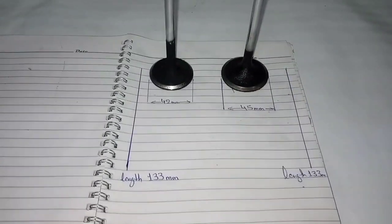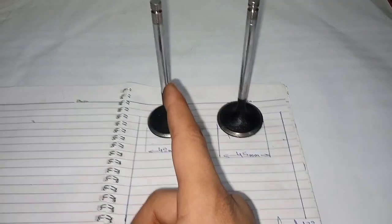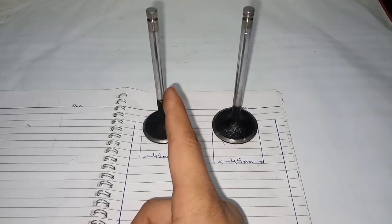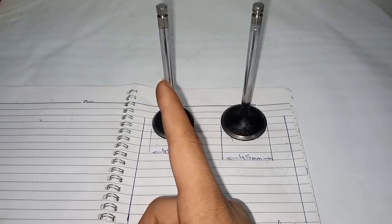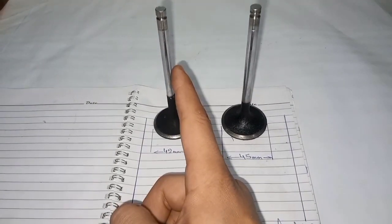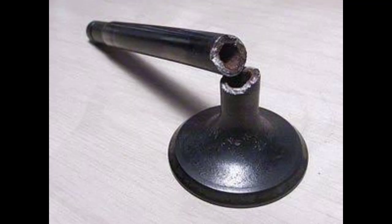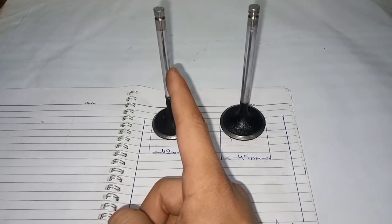There is also a major difference which is the stem of the exhaust valve is filled with sodium, which melts at 92.5 degree centigrade in order to maintain cooling and to prevent bending or breakage of valve.